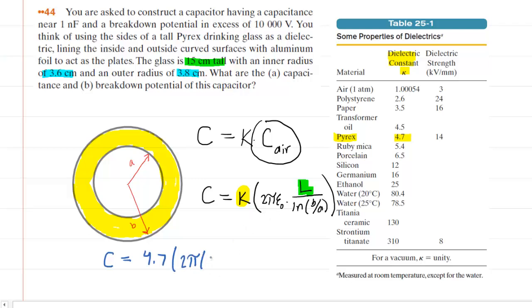Epsilon naught is a constant, 8.85 times 10 to the minus 12 coulombs squared per Newton meters squared. Then we'll multiply that by the length, which has to be converted into meters, so that's 15 times 10 to the minus 2 meters divided by the natural log of B over A, so 3.8 over 3.6.